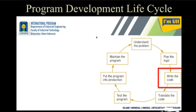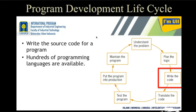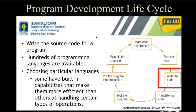After planning, you understand the problem and plan how to solve it, then you start writing the source code. For writing code, many programming languages are available — you can choose based on your needs, your understanding, and what suits your system. Not all programming languages can run on every system; if you have low processing power, you cannot run a high-power language, so you need to choose one that fits your system.